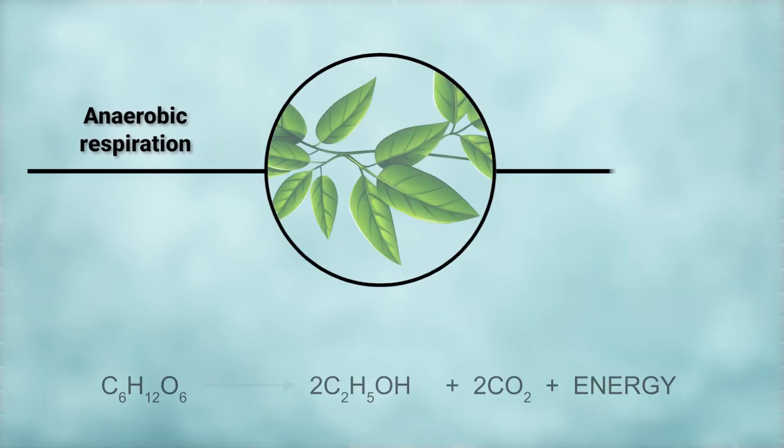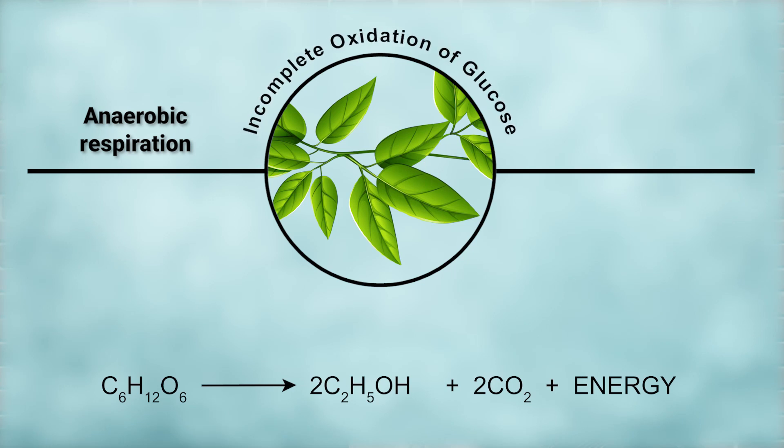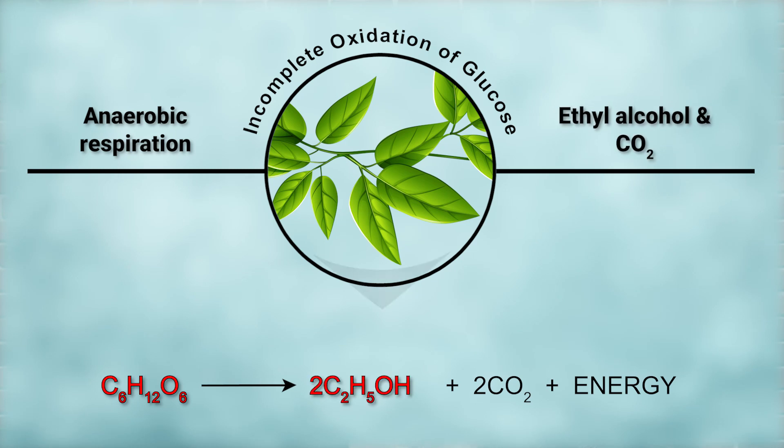Hello viewers, today we will talk about anaerobic respiration. We know that all living organisms including plants get their energy by the process of aerobic respiration. But in anaerobic respiration, incomplete oxidation of glucose takes place and the end products are ethyl alcohol and carbon dioxide. Energy released is much less than that of aerobic respiration.